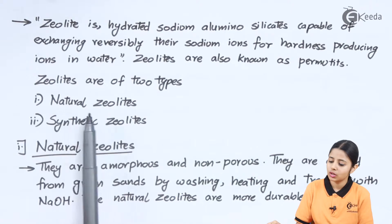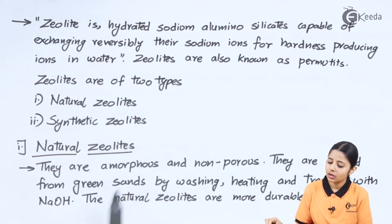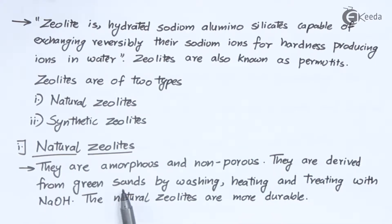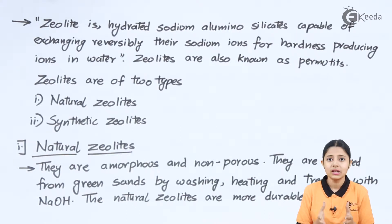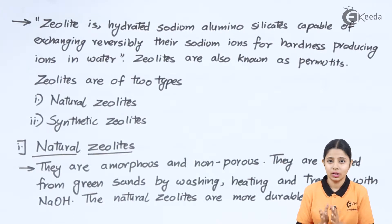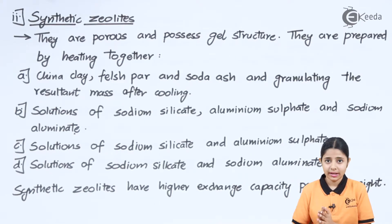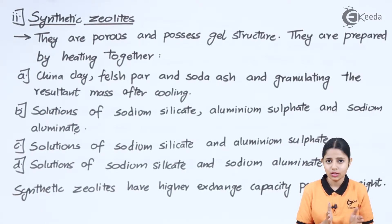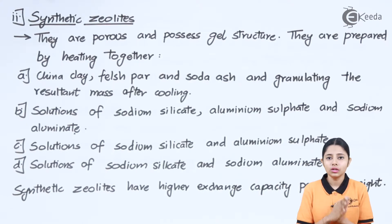Zeolites are of two types: natural zeolites and synthetic zeolites. Natural zeolites are amorphous and non-porous; they are derived from green sands by washing, heating, and treating with NaOH, and are more durable. Synthetic zeolites are man-made, inspired by the properties of natural zeolites, and are used for mass conversion of hard water into soft water.